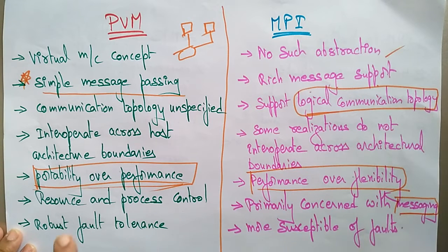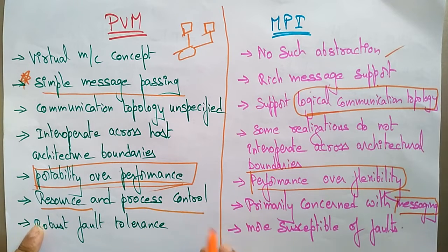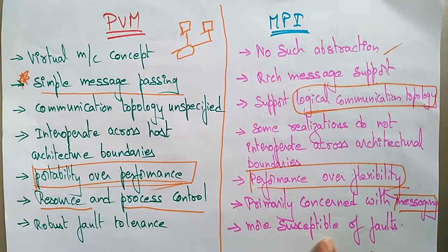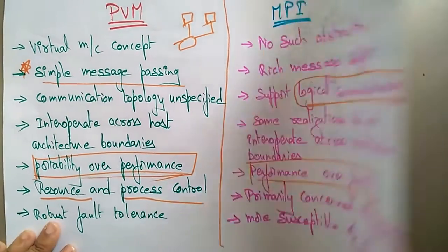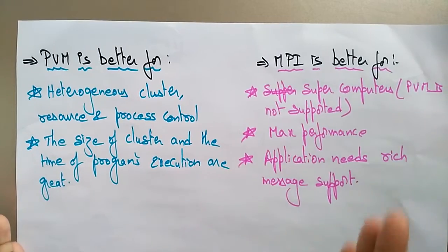In Parallel Virtual Machines, the system concentrates on resource and process control. PVM also offers robust fault tolerance, whereas MPI is more susceptible to faults.